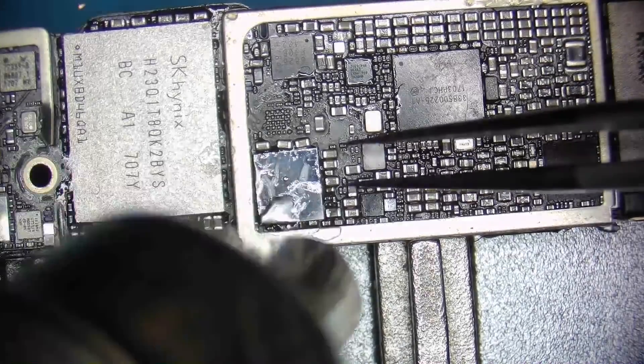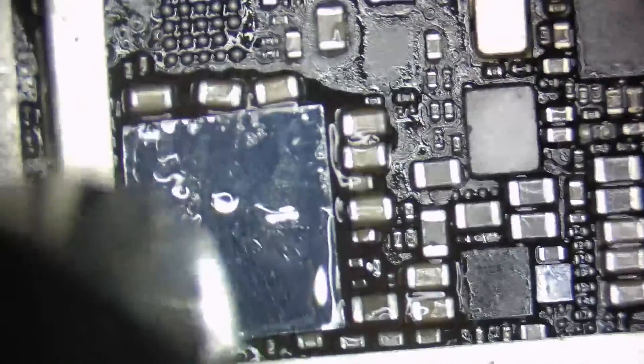Then, using hot air set to 380 degrees and 40% airflow, we heat it up until we see it move a little - that's when we know it is in fact soldered and we can stop heating it.